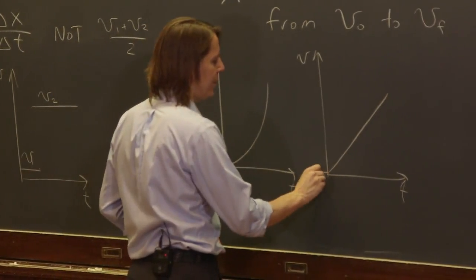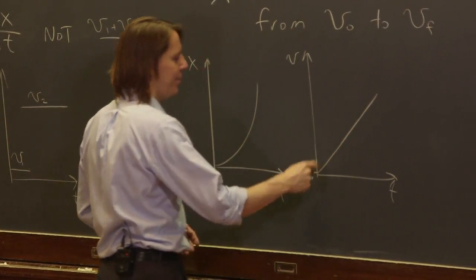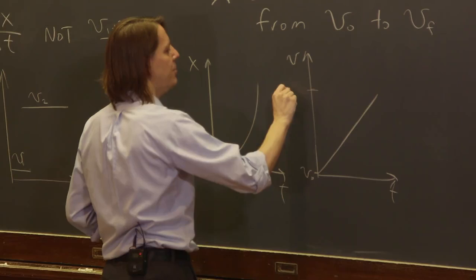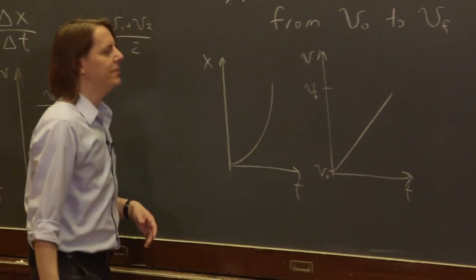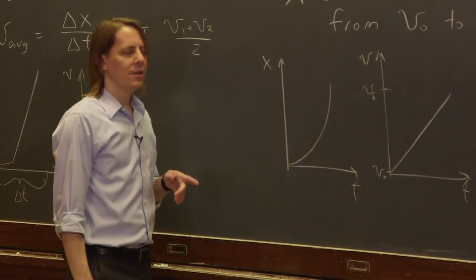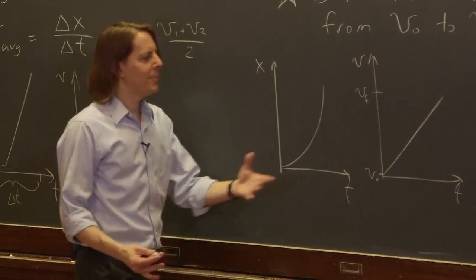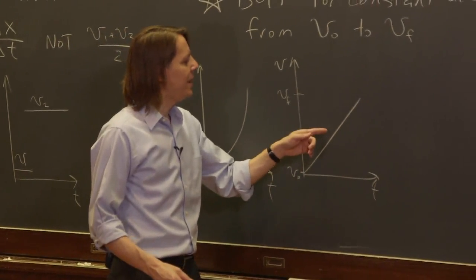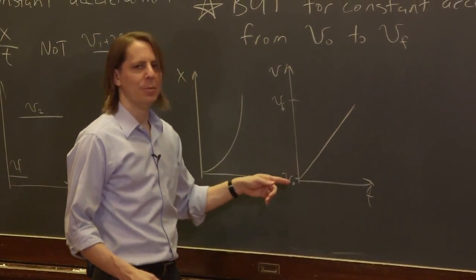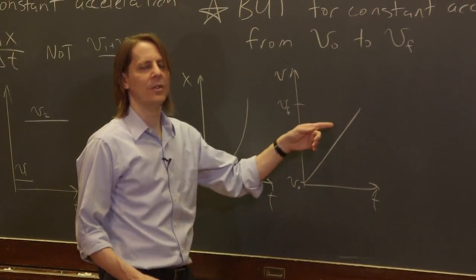So if you picked one place to be V0, I made it look like zero here. And you pick another place to be V final. In this case, the average velocity is just the average of the initial and final velocities. And mathematically, it's just because every velocity is represented with an equal amount of time in between. So it works out that it is the average.